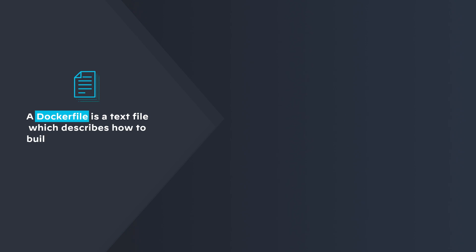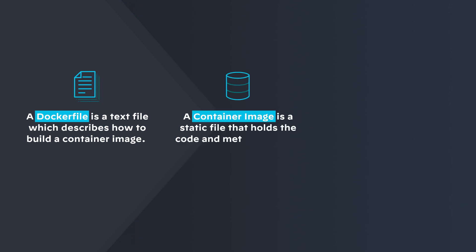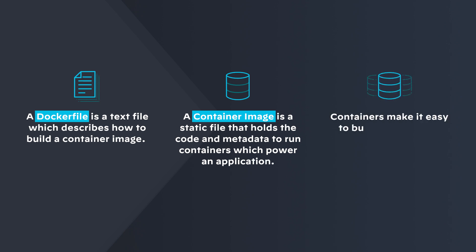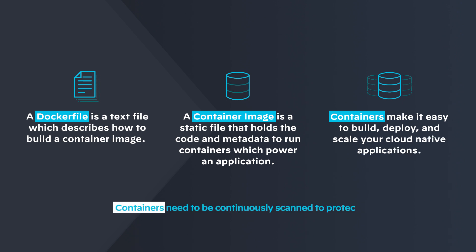Let's recap what you've learned in this episode of What's That. A Docker file is a text file which describes how to build a container image. A container image is a static file that holds the code and metadata to run containers which power an application. Containers make it easy to build, deploy and scale your cloud-native applications. Containers need to be continuously scanned to protect your applications and systems from vulnerabilities. Visit the Prisma Cloud blog for a deeper dive into container security solutions and best practices.